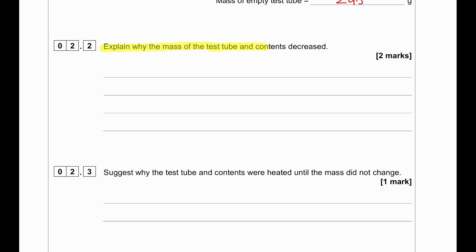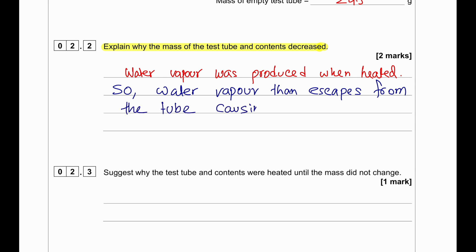Explain why the mass of the test tube and contents decreased. Hydrated cobalt chloride has water trapped inside it. Water vapor is produced when heated and the water vapor escapes from the tube, which causes the decrease in mass.